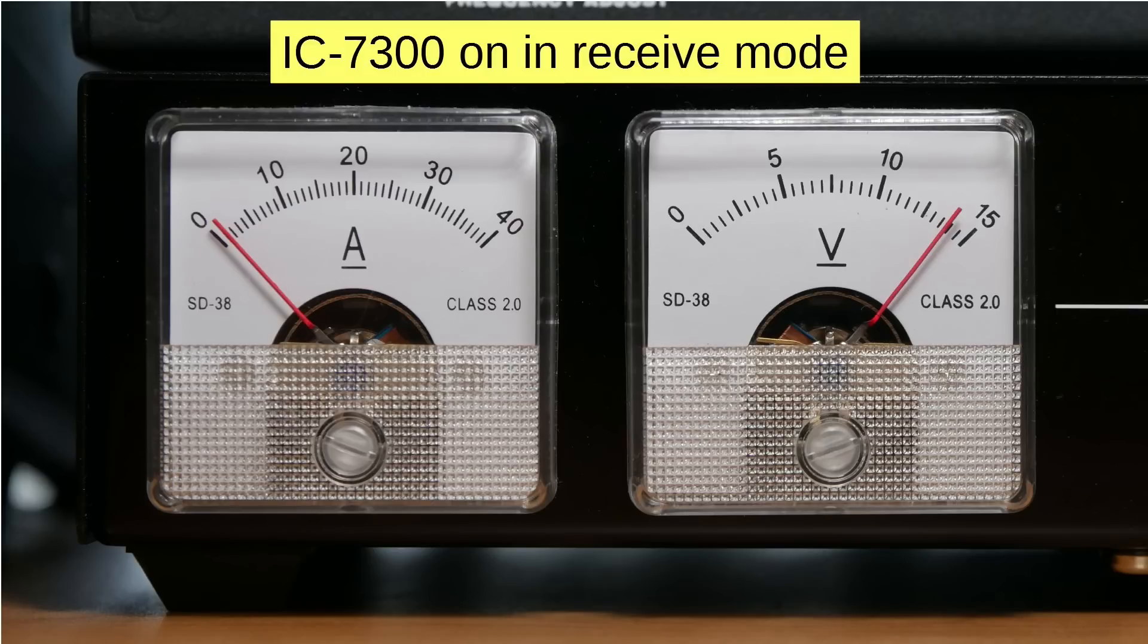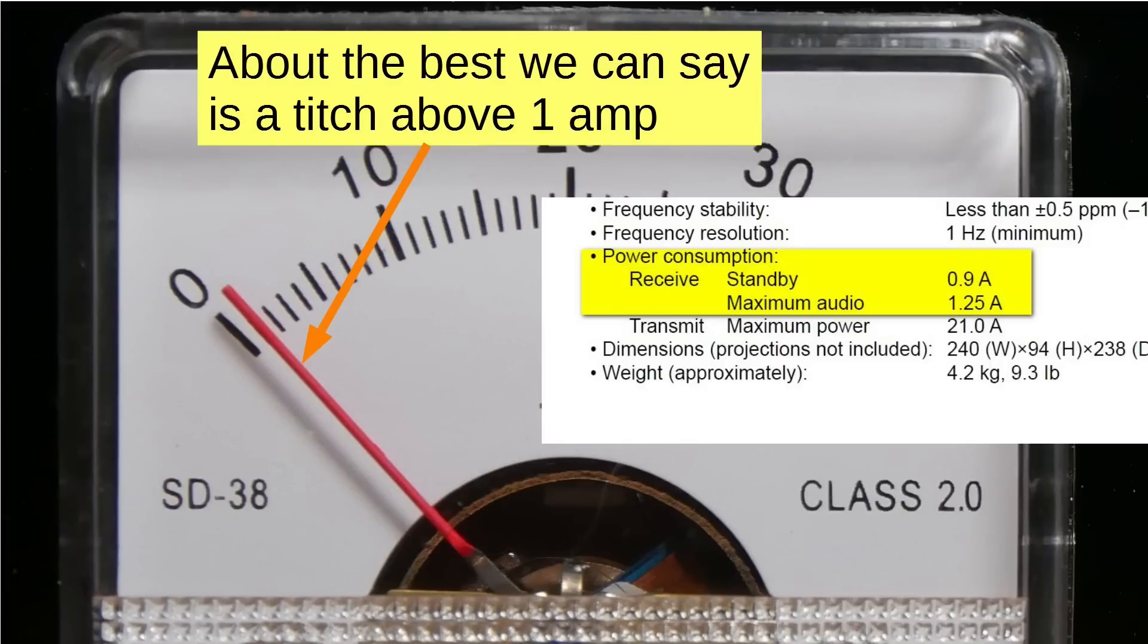Now, let's go back and look at this adjusted meters. This is the IC7300 is on in receive mode. And you'll see that the ammeter is up a little bit and the voltmeter is way over there. Let's look at them one at a time. About the best we can say on that ammeter reading in terms of precision is it's a titch above one amp. A titch. That's a technical term.